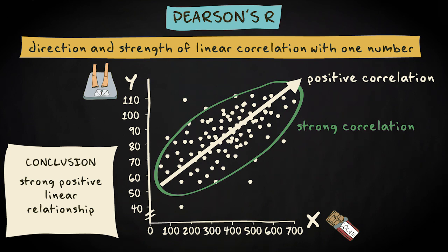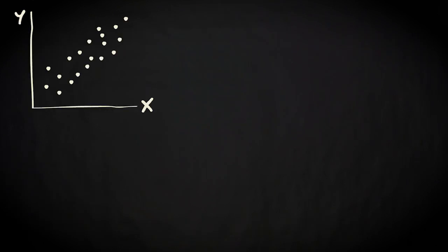However, variables could also be correlated in different ways. In this graph, we see a rather strong positive and linear relationship between the variables x and y, just like in the example with chocolate consumption and body weight.